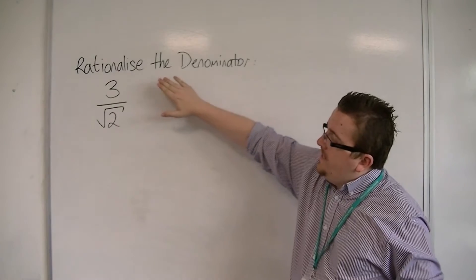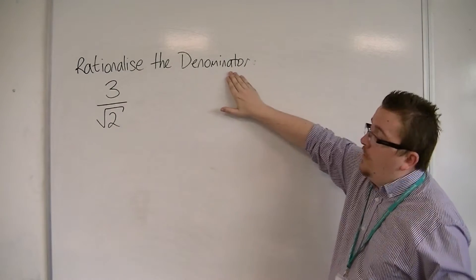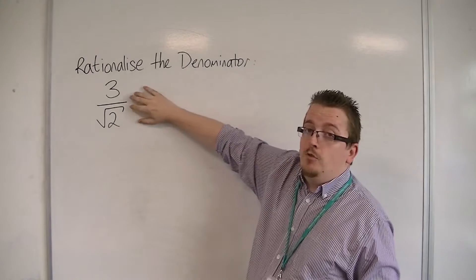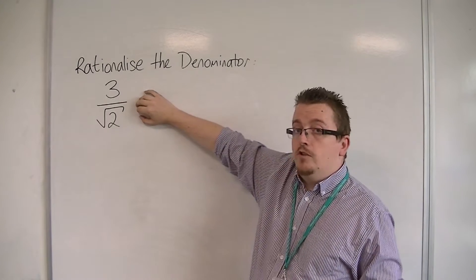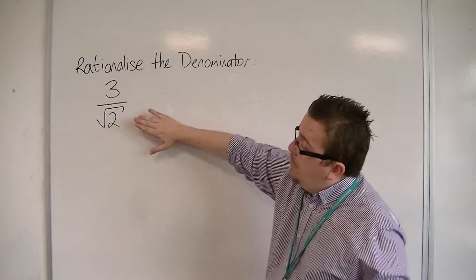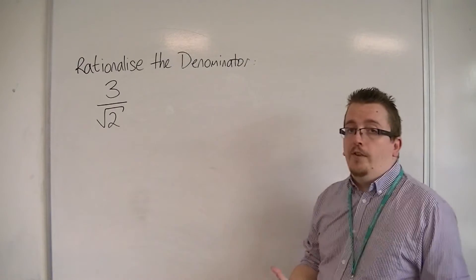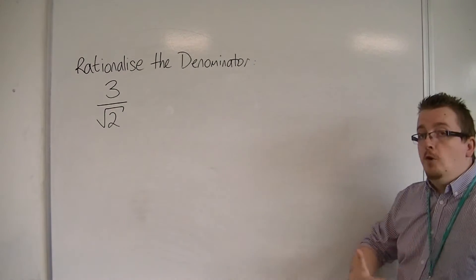Now, the idea is that we want to rationalise the denominator. We want to make the denominator in this fraction rational, because at the moment what we have there is a third over square root of 2, which we know to be irrational.